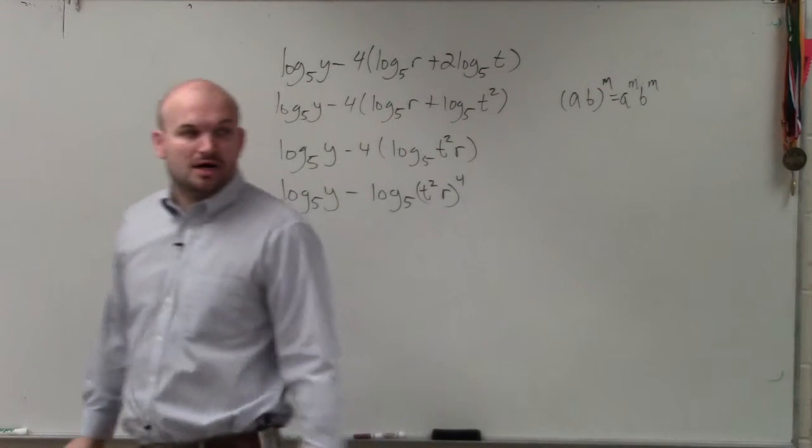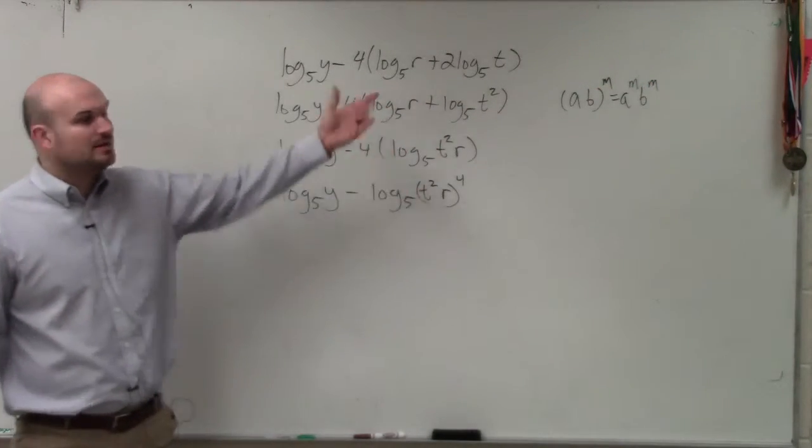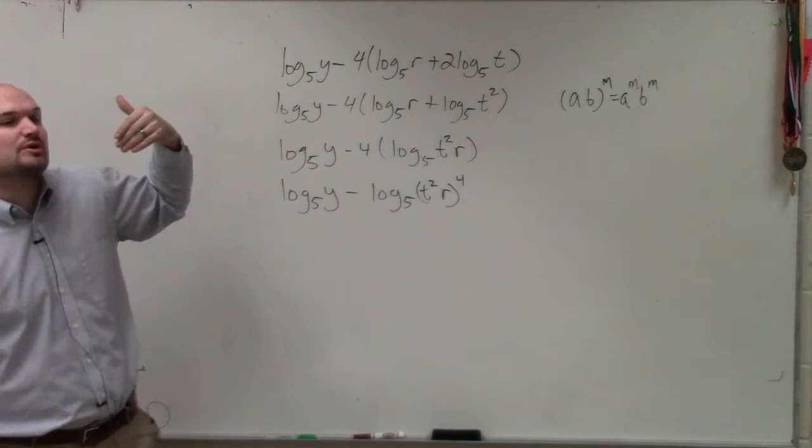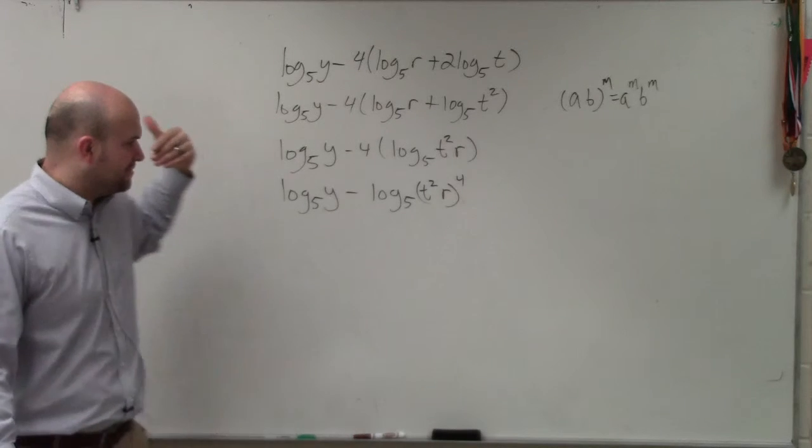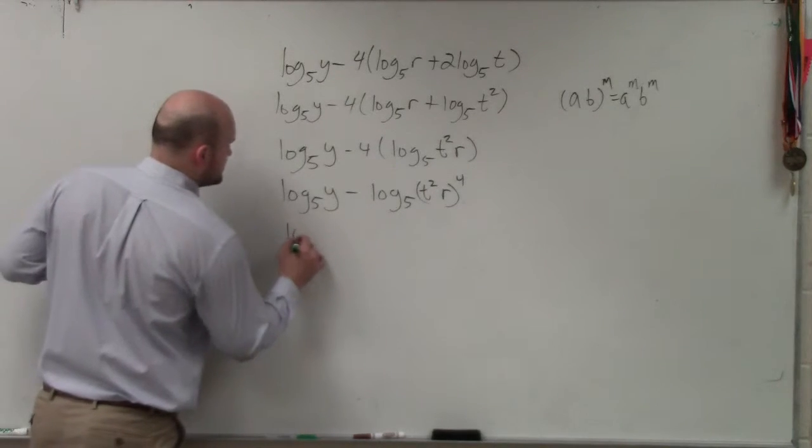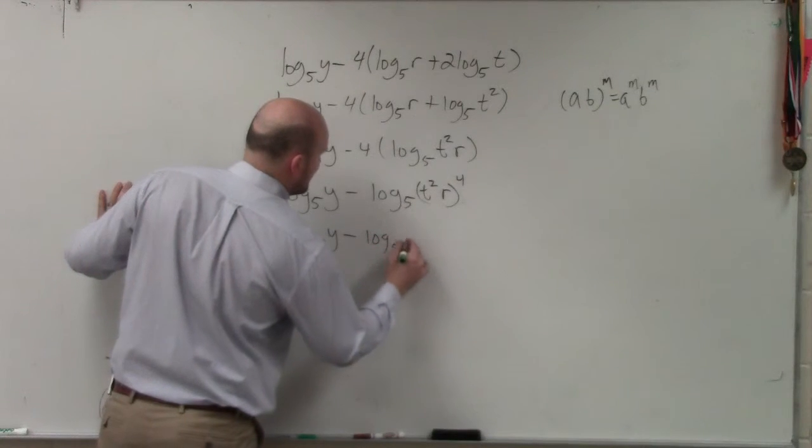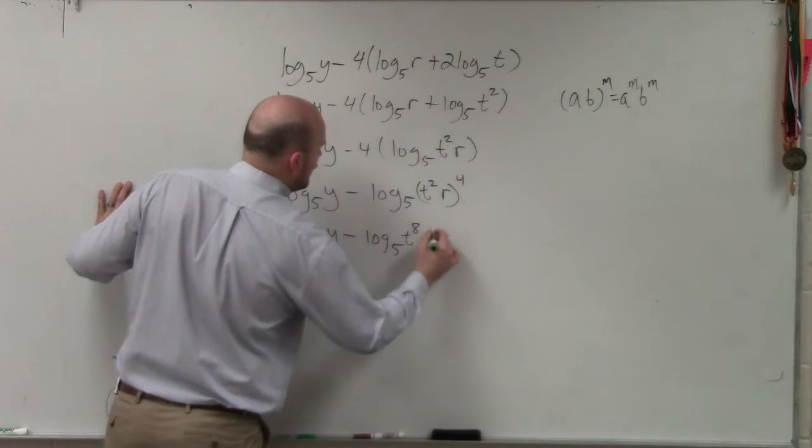If you have the product of two numbers raised to a power, you distribute that across multiplication. Remember, we can distribute across multiplication, we cannot distribute across addition or subtraction. So therefore, I have log base 5 of y minus log base 5 of t to the eighth r to the fourth.